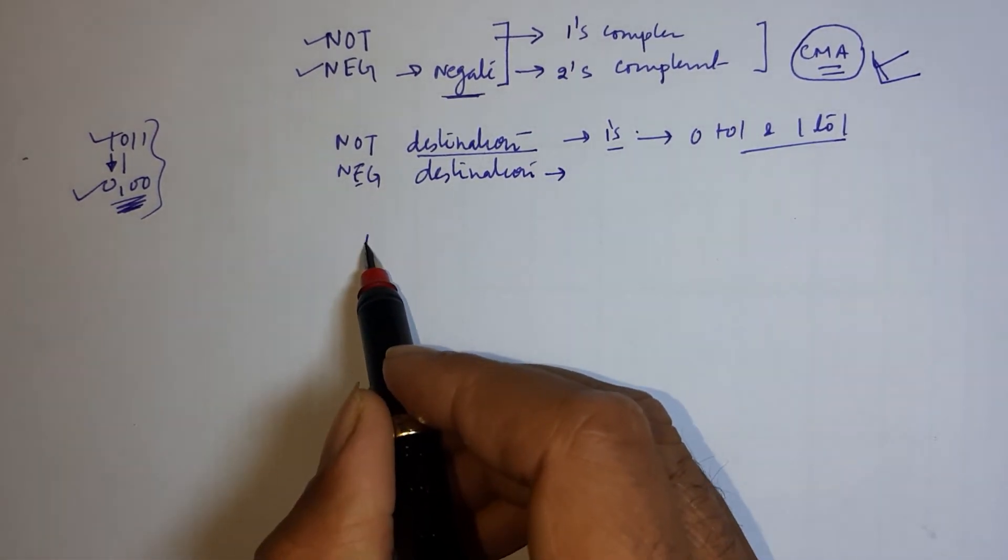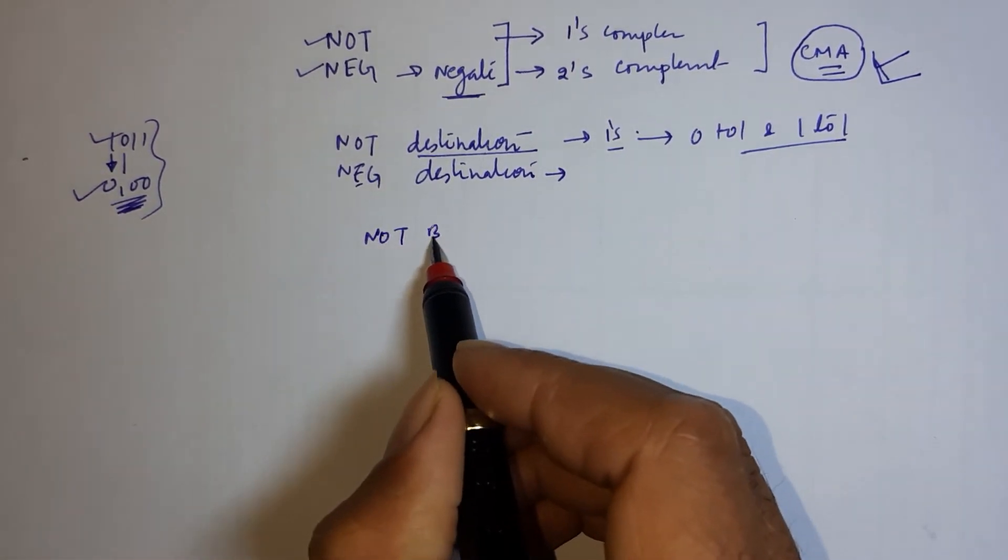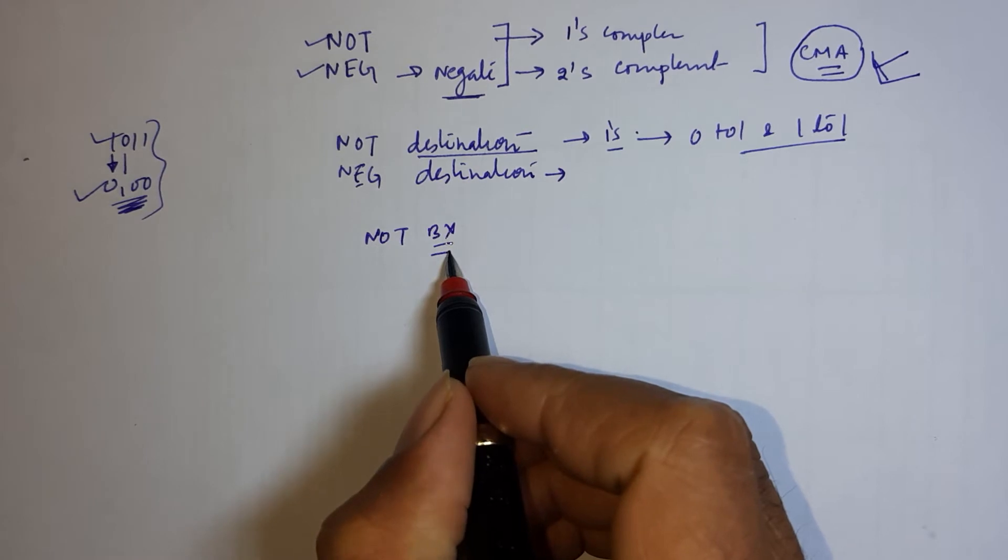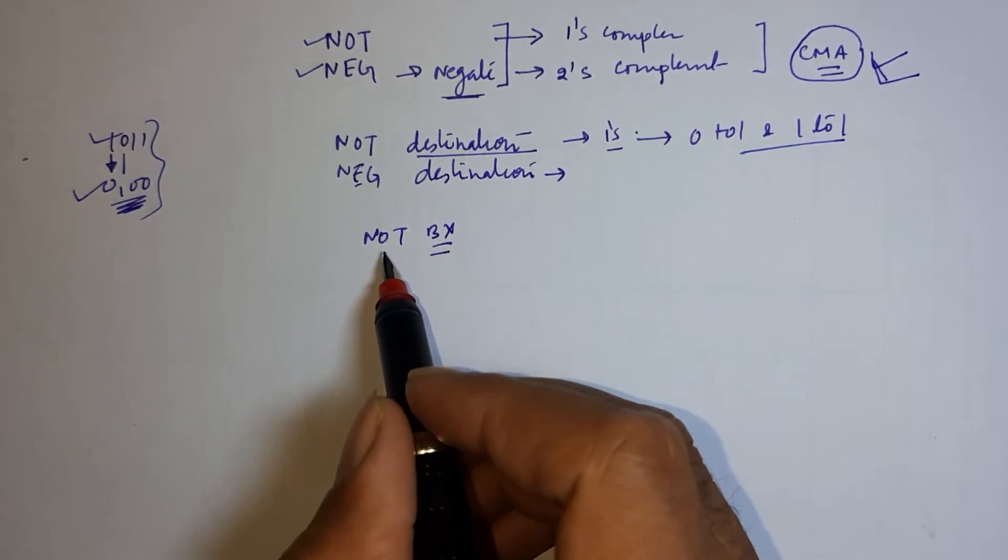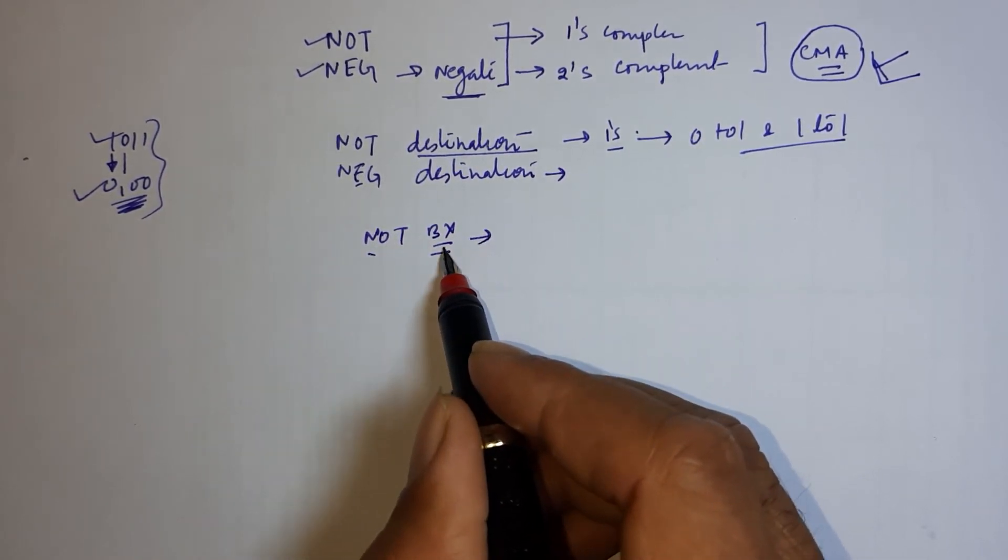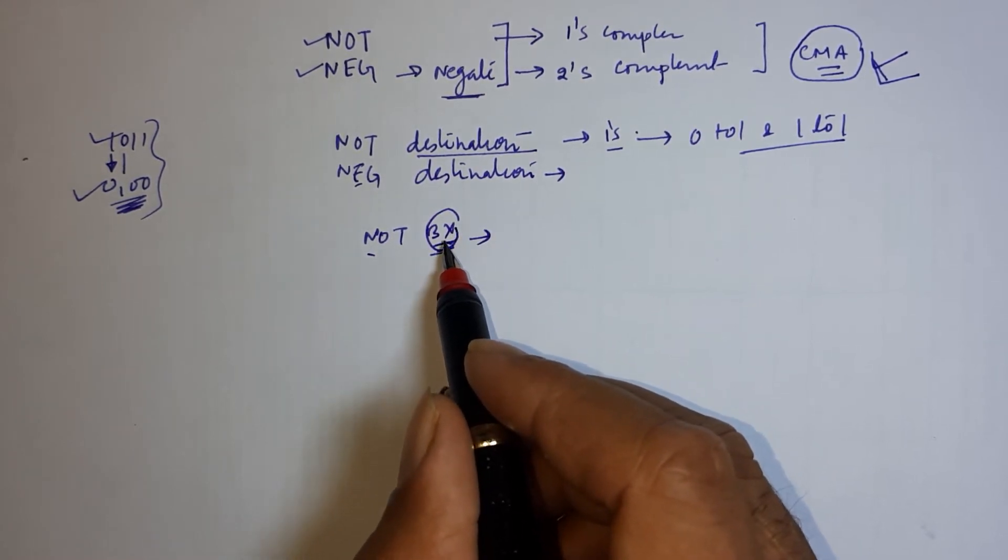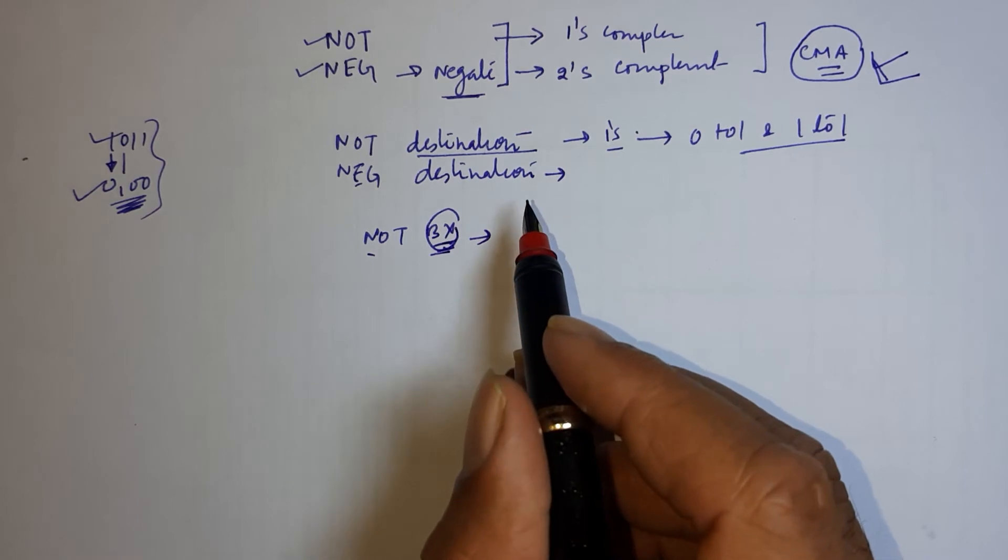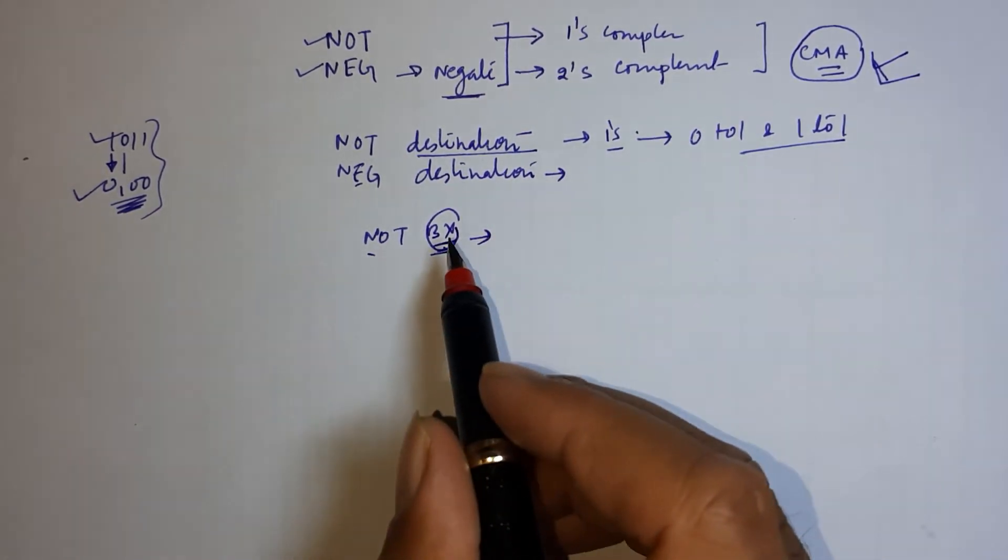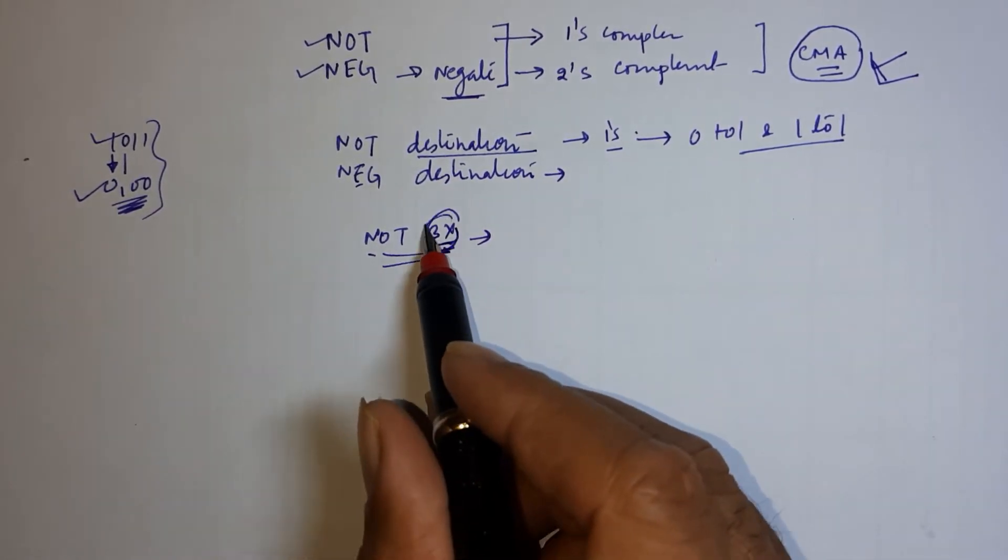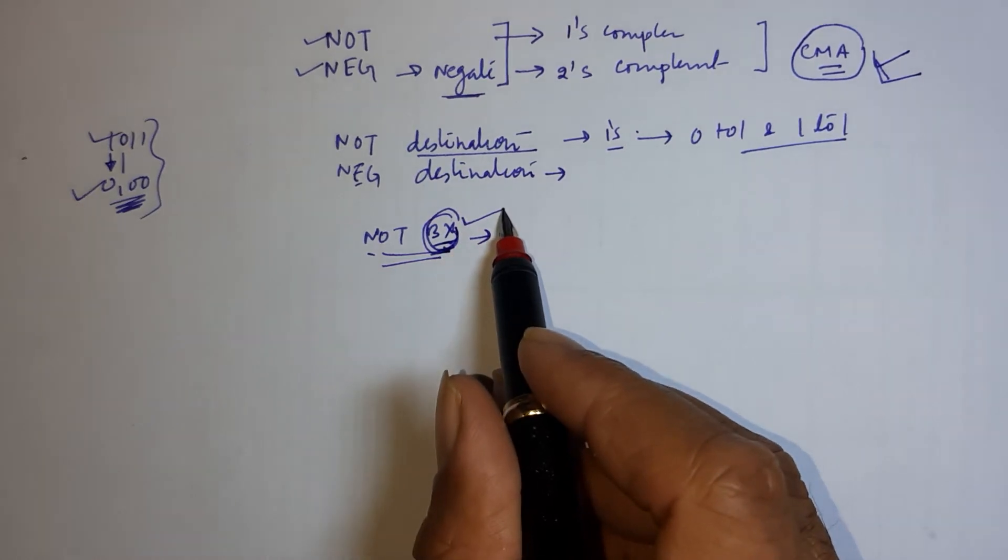So suppose here NOT BX. So BX is a register. The meaning of this will be it will do one's complement of BX, means it will invert 0 to 1 and 1 to 0. So this is basically expression and this is register here.